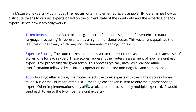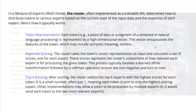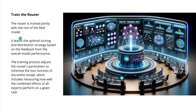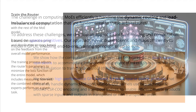The router is trained jointly with the rest of the mixture of experts model. It learns, like a neural network, the optimal scoring and distribution strategy based on feedback from overall model performance. The training process adjusts the router's parameters to minimize the loss function of the entire model — measuring how well the combined effort of all experts performs on a given task. This is quite time-intensive, so watch out to have the perfect training datasets. You train the router and the complete system to achieve the mixture of experts benefit.